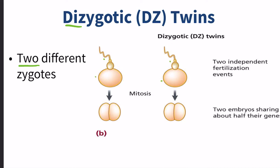Dizygotic twins come from two different zygotes, two different sperm, and two different eggs. What happens is the mother ovulates twice — she releases two separate ova. If those ova both get fertilized by two separate sperm, we have dizygotic twins. This is what fraternal twins are. Fraternal twins are really similar to just regular siblings, because they come from two separate zygotes and share about half of their genes, just like any typical sibling would.